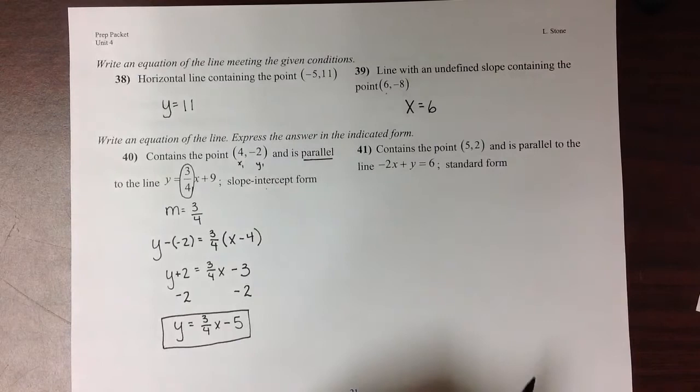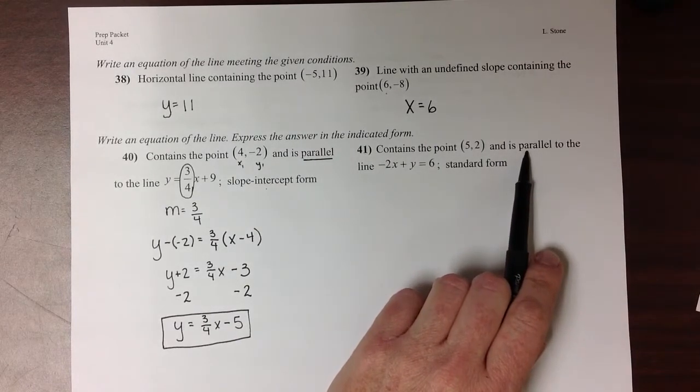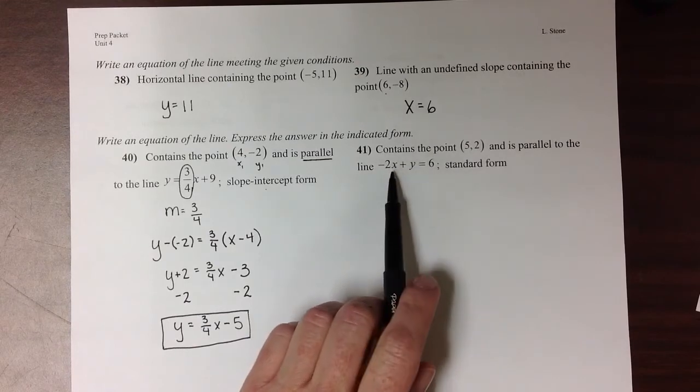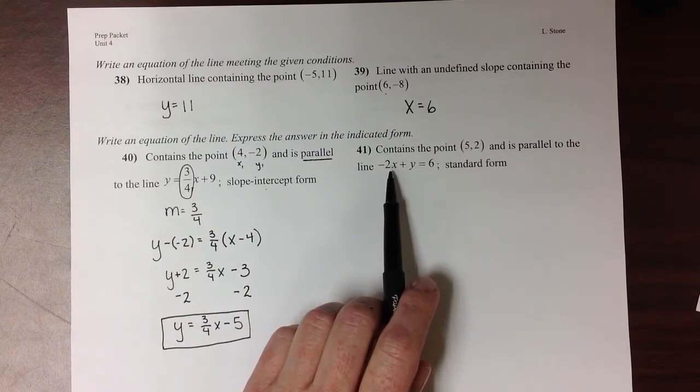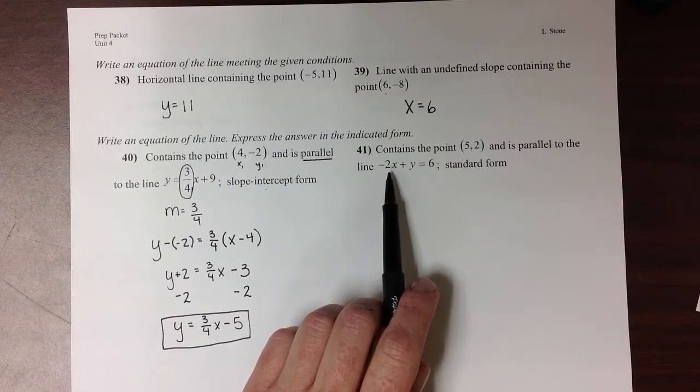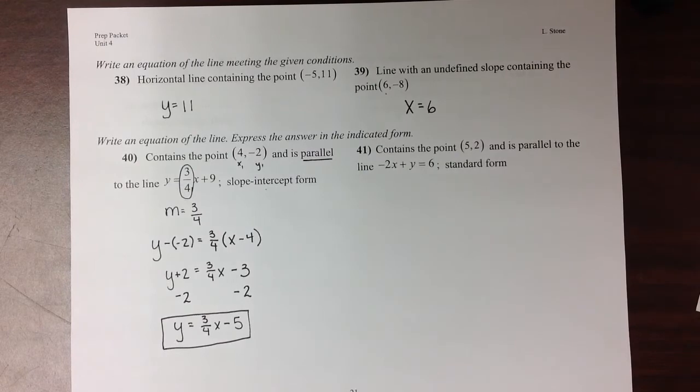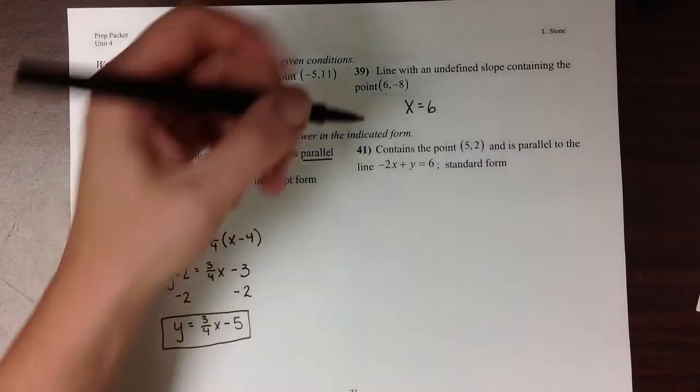In the next problem, I'm also told that the slopes are parallel. And I'm given this equation. Well, since this equation is not in slope-intercept form, I can't tell what the slope of the equation is. So I'm going to do some rearranging on it first to find that slope.